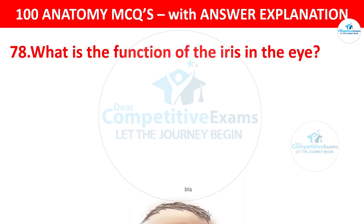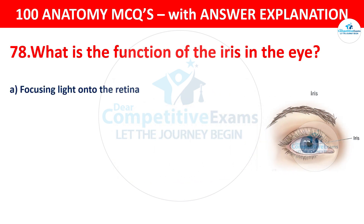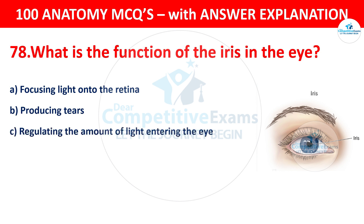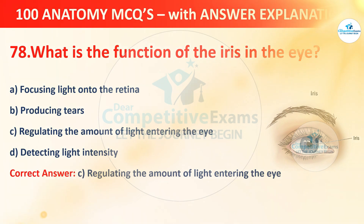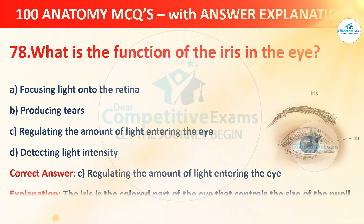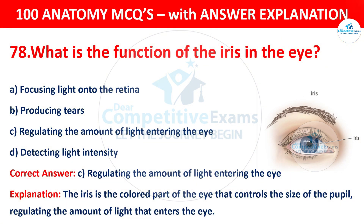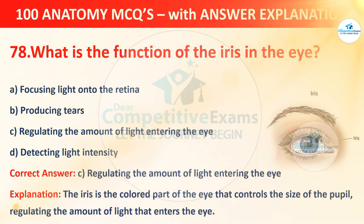Question number 78: What is the function of the iris in the eye? The options are: Focusing light onto the retina; Producing tears; Regulating the amount of light entering the eye; or Detecting light intensity. The correct answer is C — regulating the amount of light entering the eye. The iris is the colored part of the eye that controls the size of the pupil, regulating the amount of light that enters the eye.